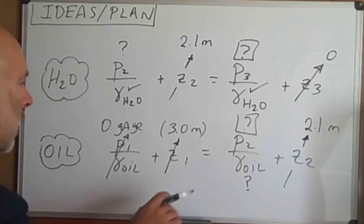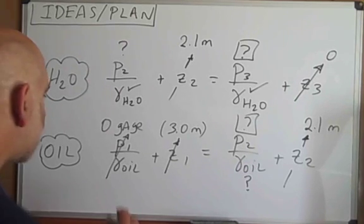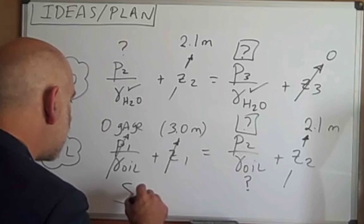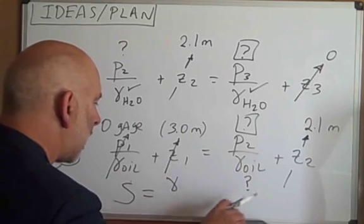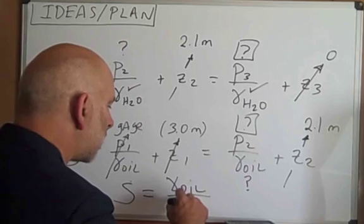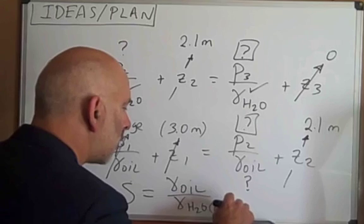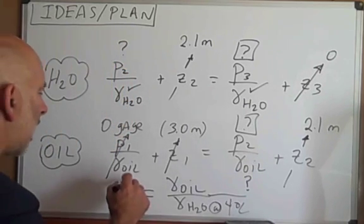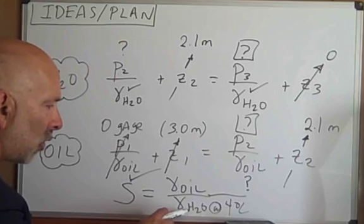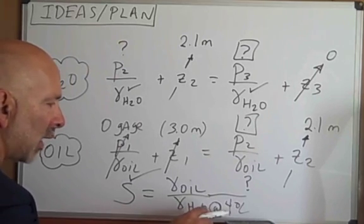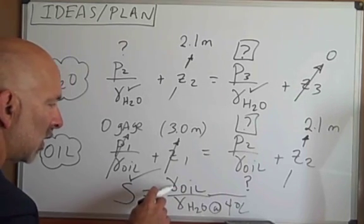And so, we have two equations and three unknowns, so we need one more equation. And our third equation is the definition of specific gravity. So, if we write specific gravity is specific weight of the oil ratio to the specific weight of water at 4 degrees C. This value is given. We can look this up, and this turns out to be the same value as the specific weight of water at 10 degrees C. And so, we can use this equation now to find the specific weight of oil.